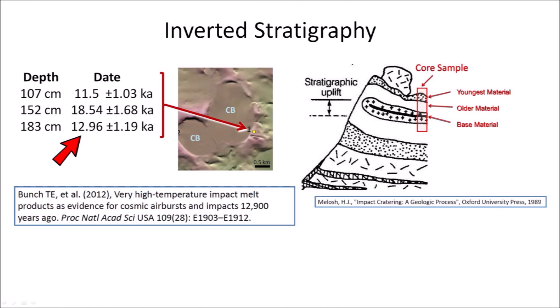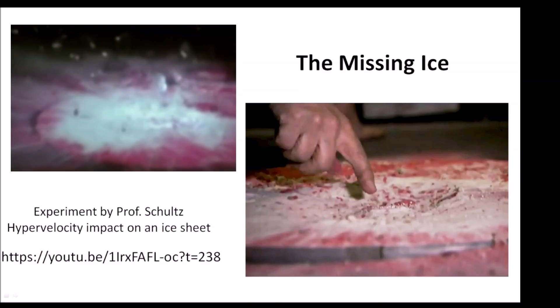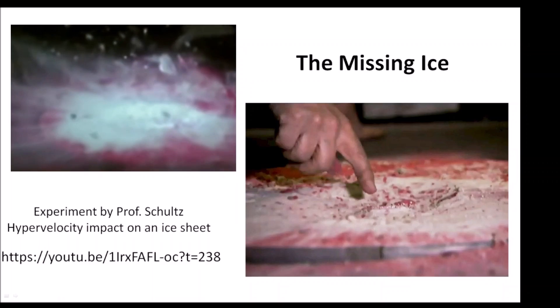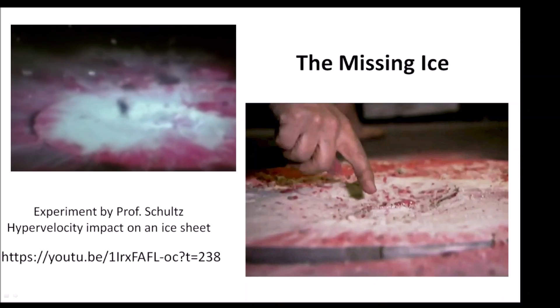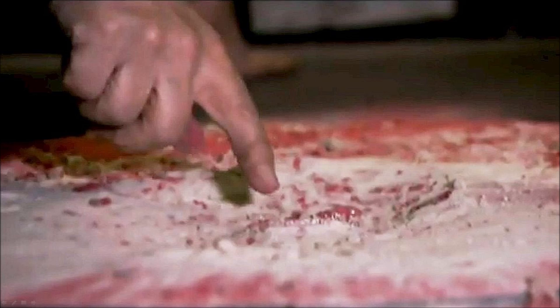There are other clues that the Carolina Bays originated from impacts about 12,900 years ago. One characteristic of impact cratering is inverted stratigraphy in the rim: the base material at the time of impact is overlaid by older excavated material, which is then covered by younger material. A core sequence reported by Bunch in 2012 shows exactly these characteristics. The ice at the site of an extraterrestrial impact would have been ejected, leaving no ice to deposit glacial debris in moraines. An experiment by Professor Schultz shows that most of the ice at an impact site would have been blown away by the force of the impact, and he points out that an ice sheet acts as a shield preventing formation of a typical crater, with wind and water erosion soon erasing all signs of impact.